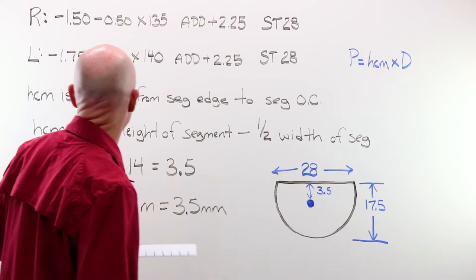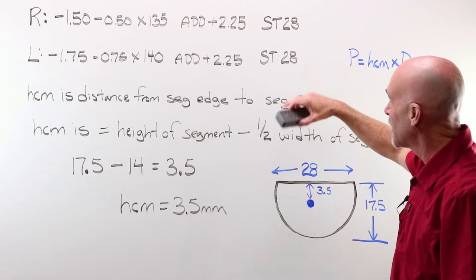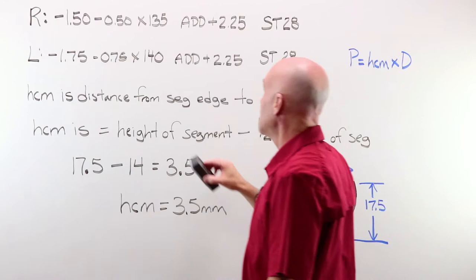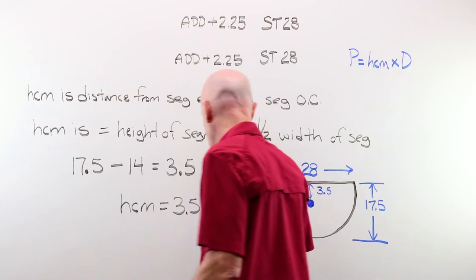let's just say you had a customer come in, they have this new lens order, a minus 150, minus 50, 135 with an add of 225. We know they're going to be in a Straight Top 28. Their left is a minus 175, minus 75, 140, add of 225, Straight Top 28. What's kind of nice is we don't actually need any of that.